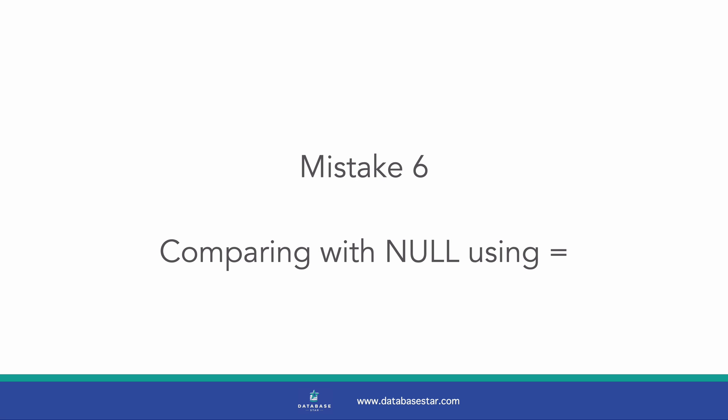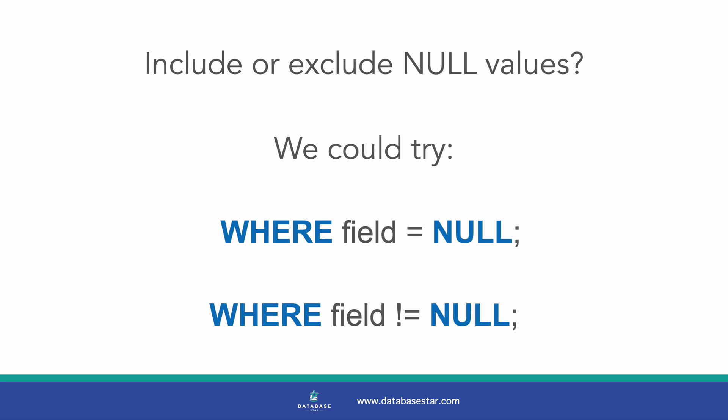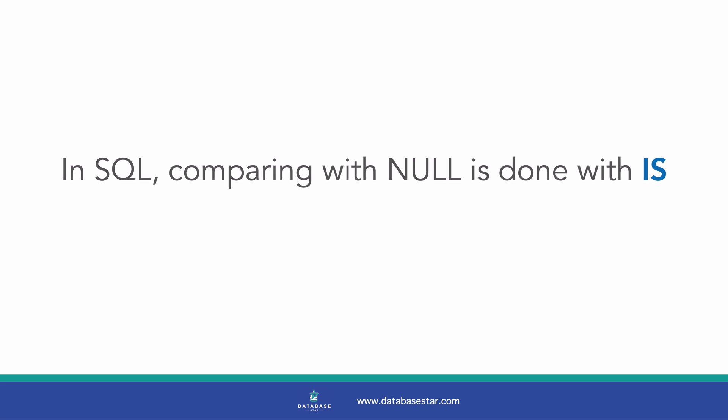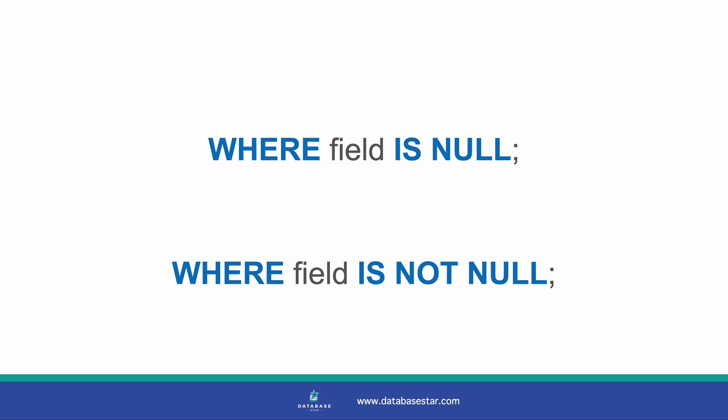Mistake number 6 is when we try to compare with NULL values. If we want to compare with a NULL value in our WHERE clause, to include or exclude values of NULL, we may be tempted to write WHERE FIELD equals NULL, or WHERE FIELD not equals NULL. This makes sense intuitively, but in SQL, to compare something to NULL, we use the IS keyword. We would write WHERE FIELD IS NULL. If we use equals, we'll get an error or incorrect results. So remember when comparing something to NULL, use IS instead of equals. A similar rule applies to NOT equals — use IS NOT instead of NOT equals.